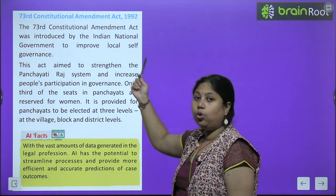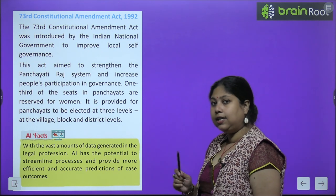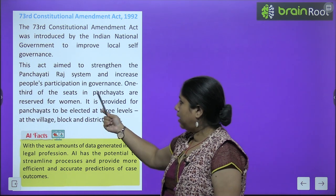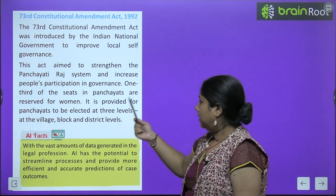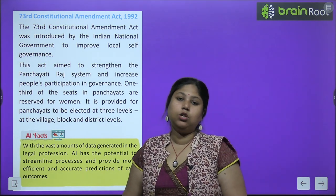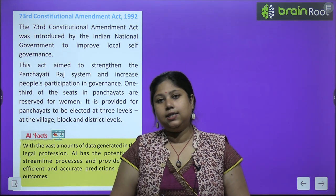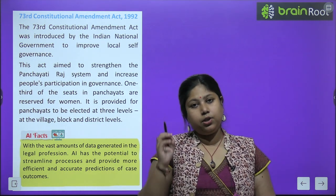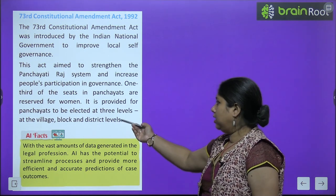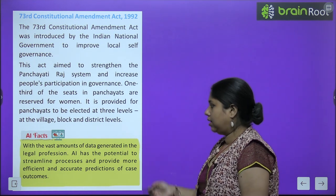The 73rd Constitutional Amendment Act was introduced by the Indian government to improve local self-government. These changes were made in 1992. The act aimed to strengthen the Panchayati Raj system and increase people's participation in governance. One-third of the seats of panchayats are now reserved for women. Earlier women had no place in the panchayat; now one-third is reserved for them. Panchayats are to be elected at three levels: village, block, and district.